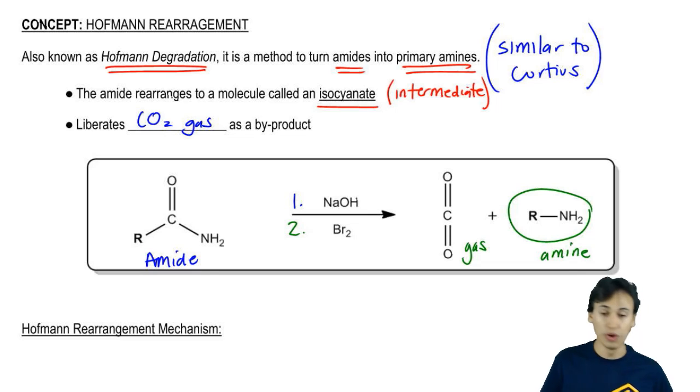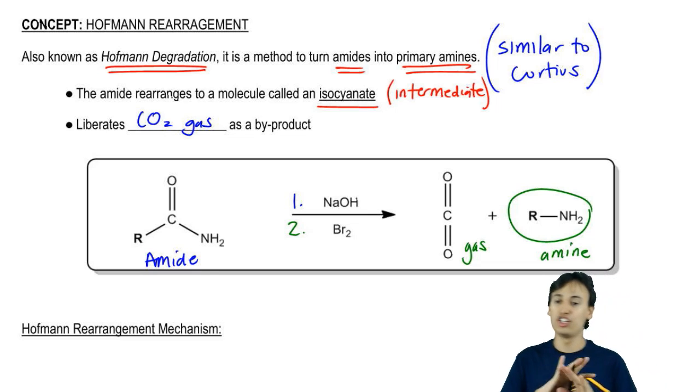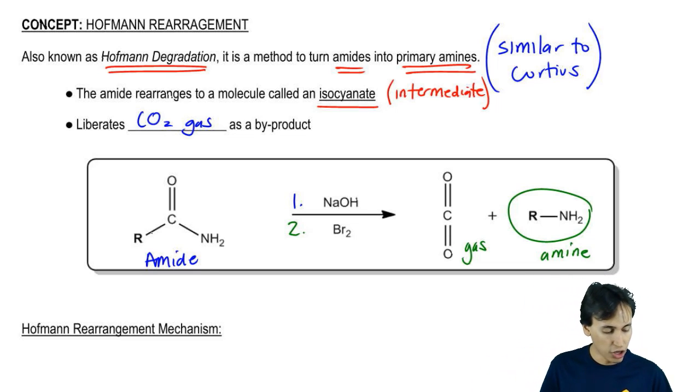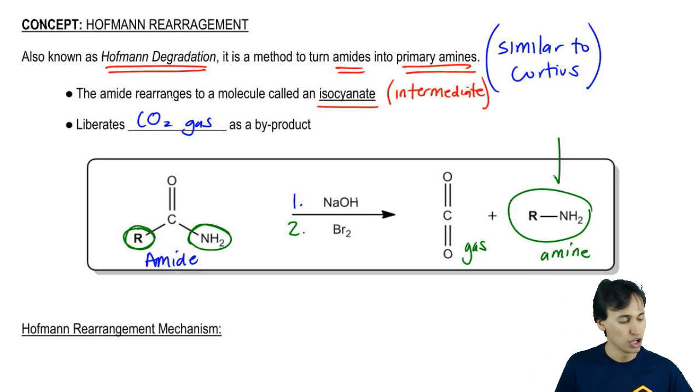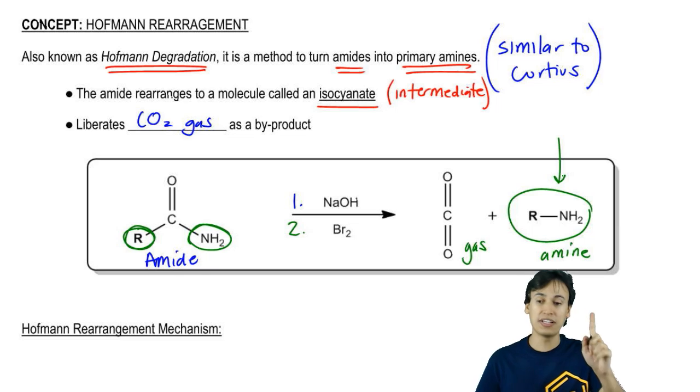Now notice that one thing that happens here, just talking in general terms, is that the R group that was originally on one side of the carbonyl eventually gets attached directly to the nitrogen. Notice that before I had them separated by a carbon and now I have them directly attached to each other. That's because I'm able to get rid of the carbonyl in the middle through decarboxylation.